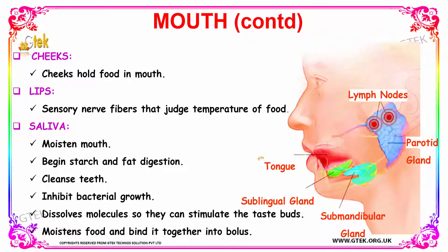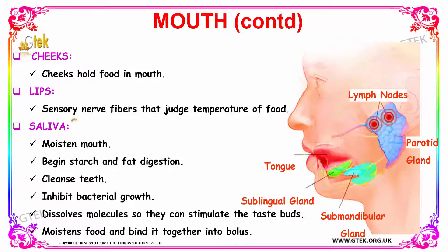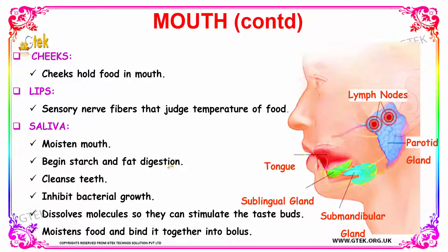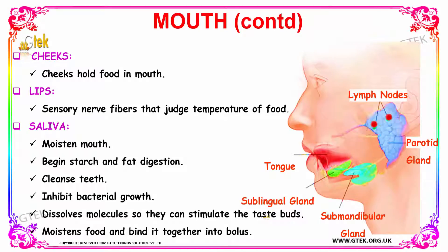Next, we are going to see the various parts of your mouth such as your cheeks. Your cheeks are meant for holding your food in the mouth. Your lips have sensory nerve fibers which judge the temperature of the food. Your saliva, secreted by the salivary glands, will moisten the mouth, begin starch and fat digestion, cleanse your teeth, prevent bacterial growth, and help dissolve molecules so they can stimulate the taste buds. Your saliva also moistens the food and binds it together into a bolus.